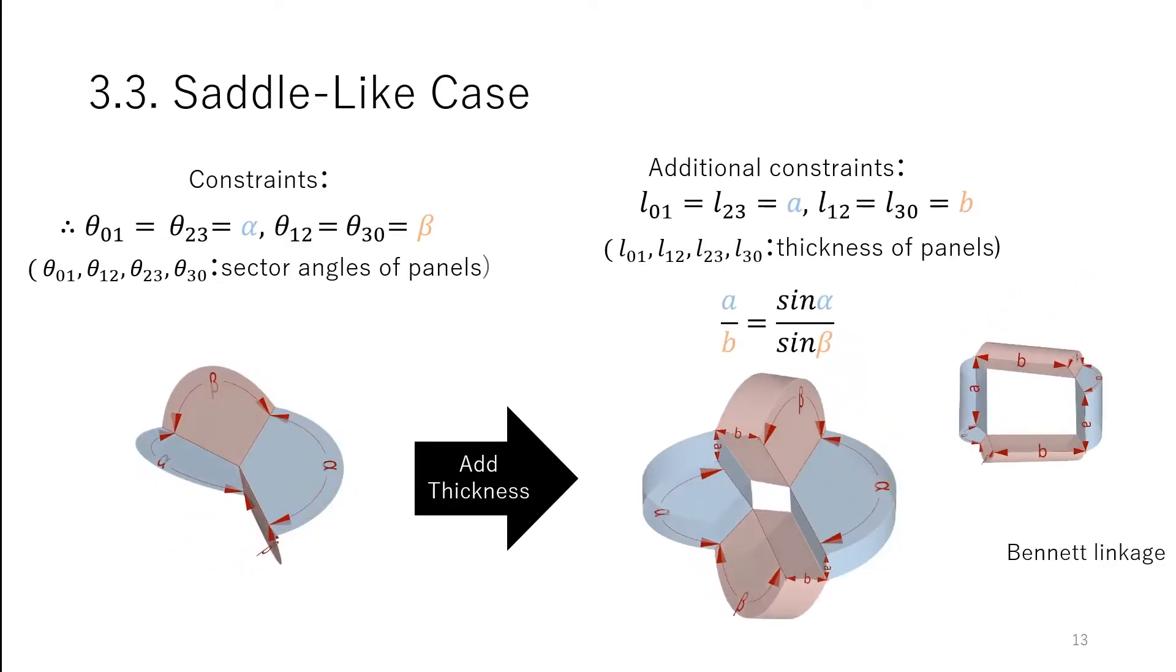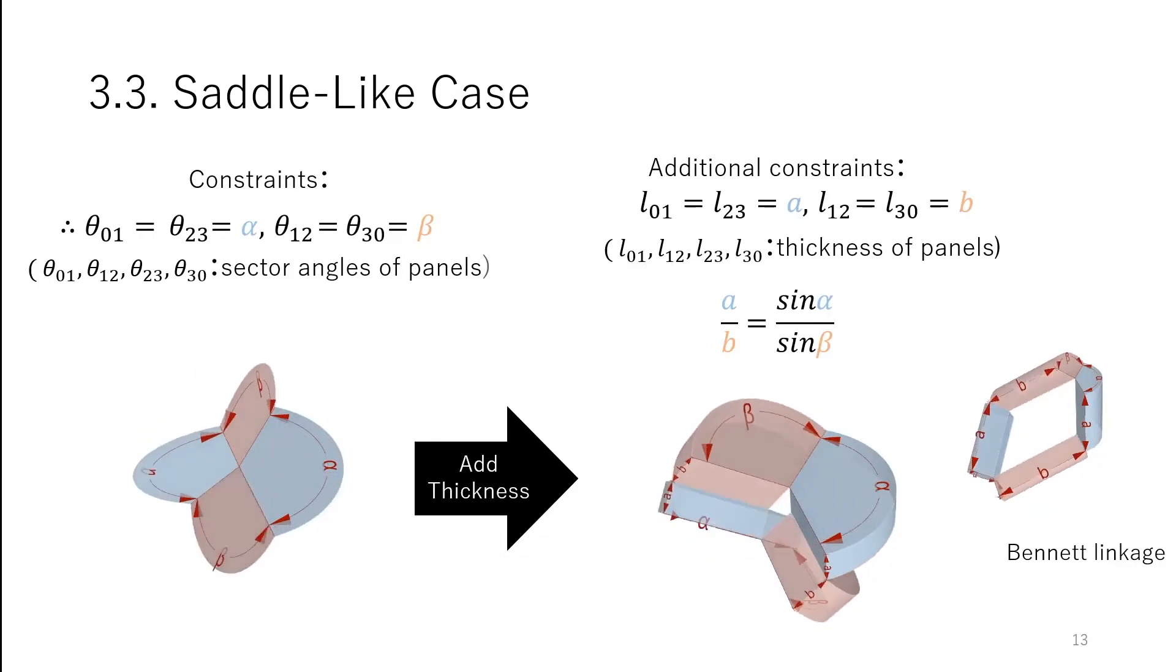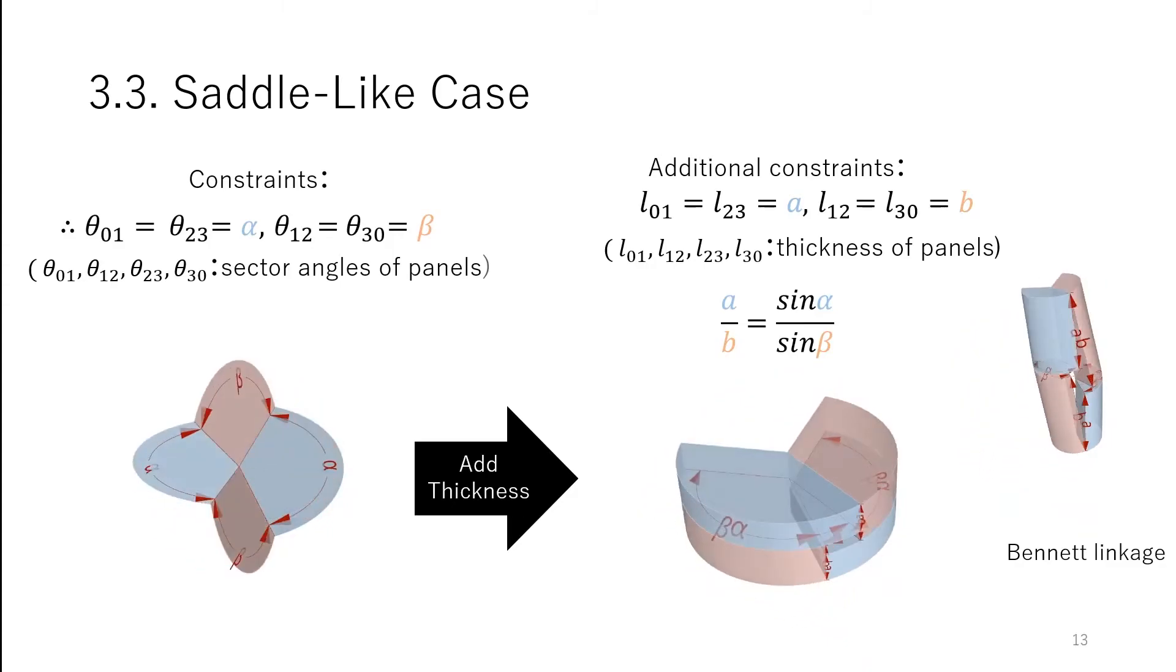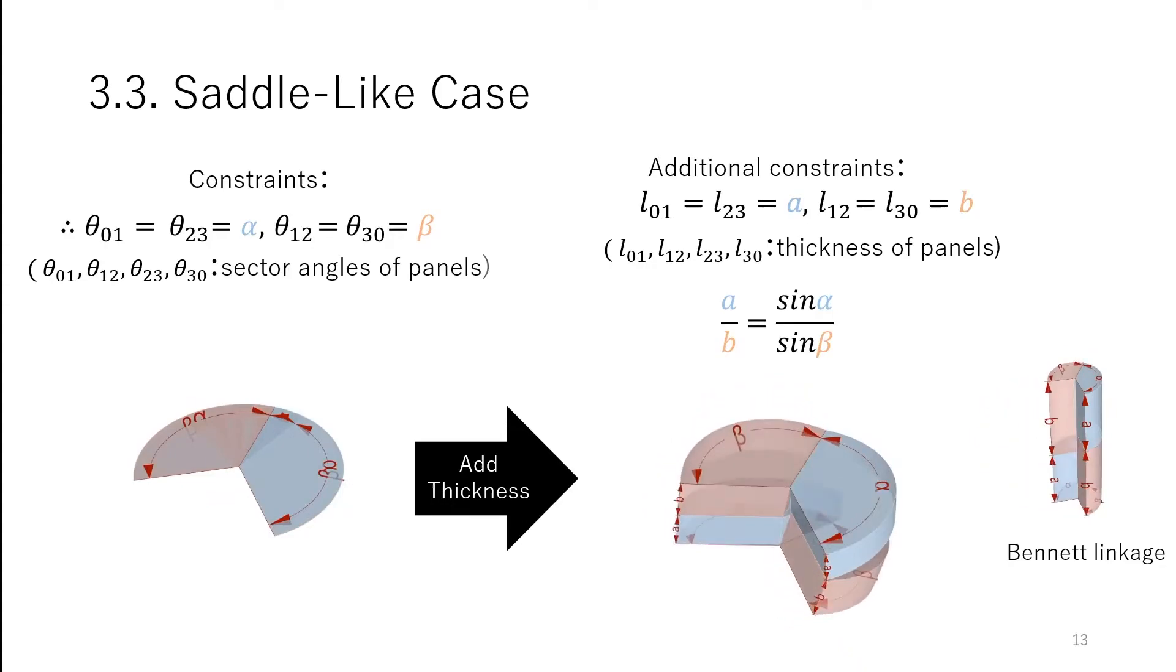When adding thickness to saddle-like vertices, an opposite pair of axis with mountain creases shift inward, and the other opposite pair with valley creases shift outward. This forms a spatial forward linkage, which is not generally a mechanism.